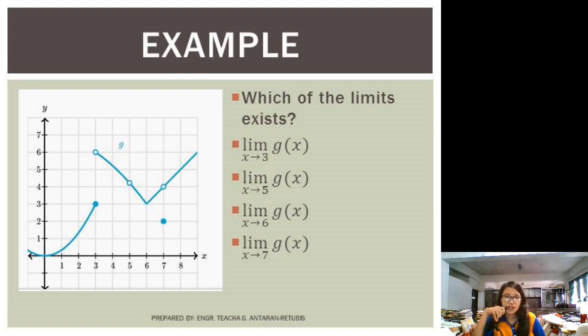We are to check whether these limits do exist. Okay? Let us first try having this limit of g of x as x approaches 3. Okay? So we have two approaches to be done. It should be done from the right and from the left in order to check if the limit really exists.